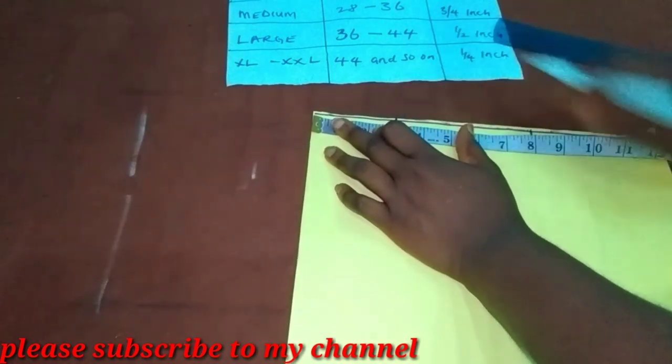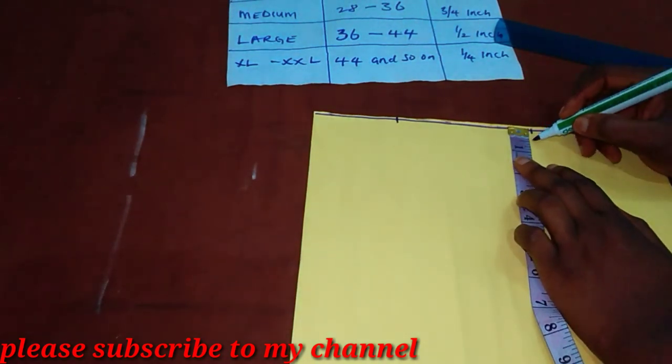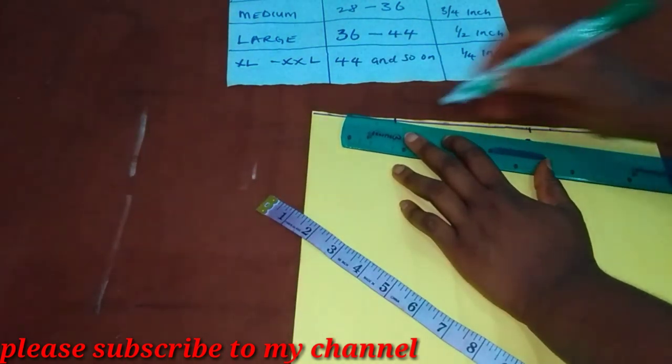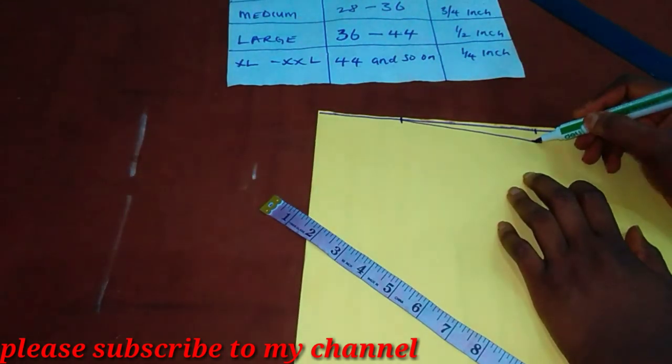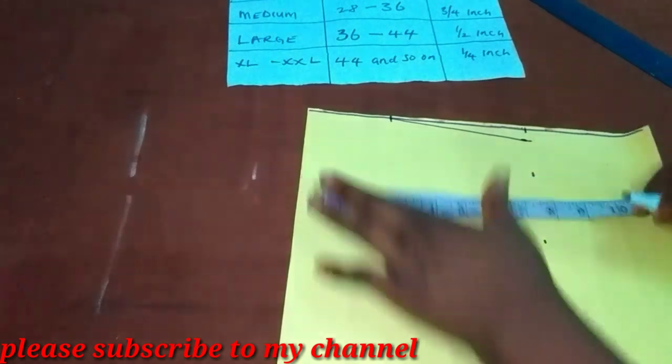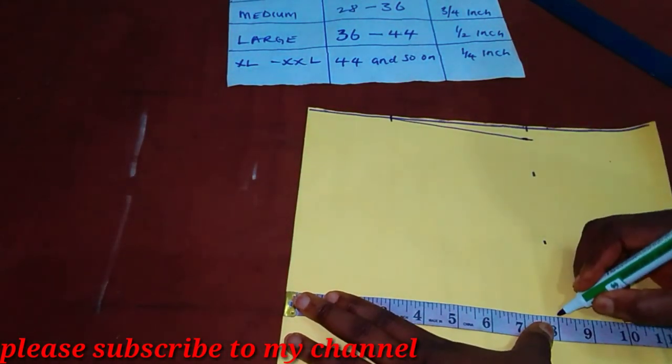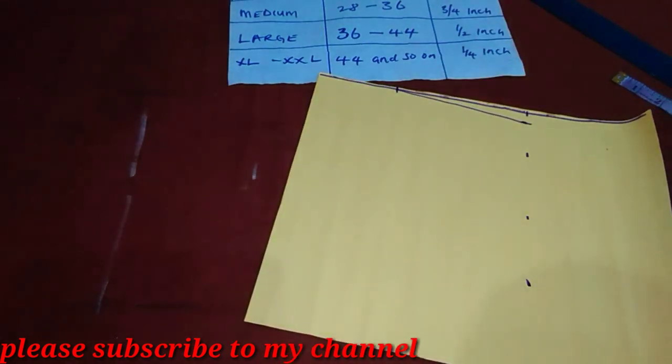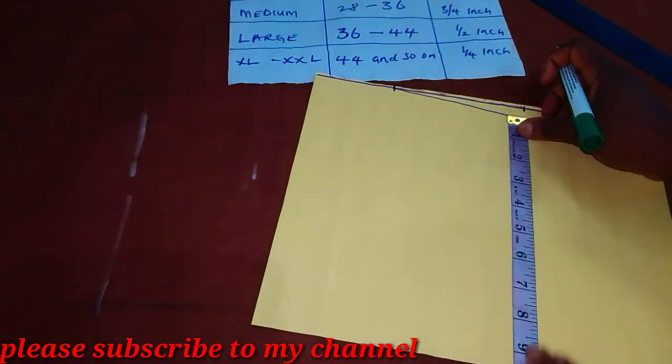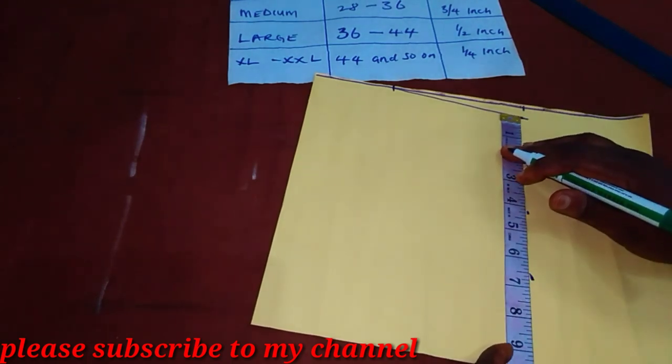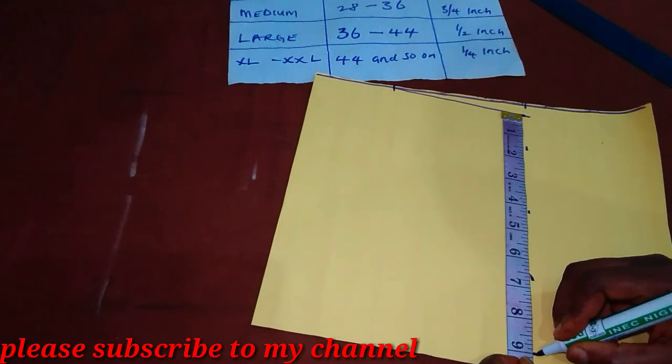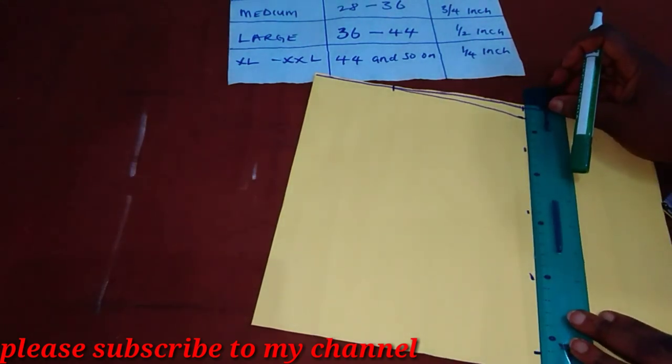You mark also your shoulder length. First, 3 inches. And then shoulder length of either 1 inch or 1.5 inch depends on you. But I'll be using half an inch. You connect it with a straight line. So, this is still my shoulder. I just want the line to be straight. Now, you need to mark the armhole depth. I will still be using 9 inches.